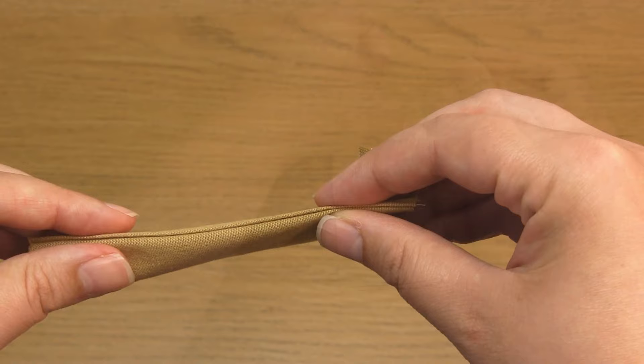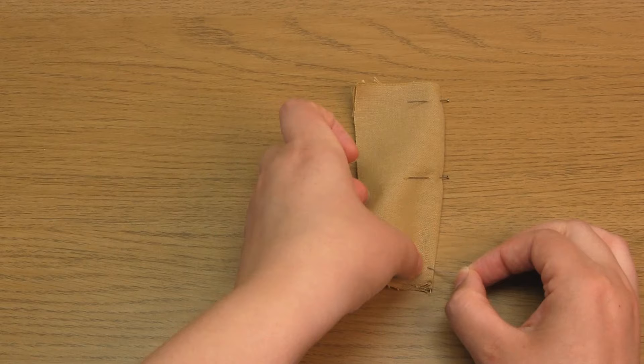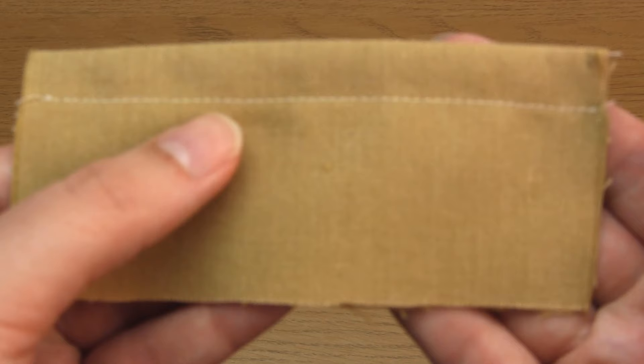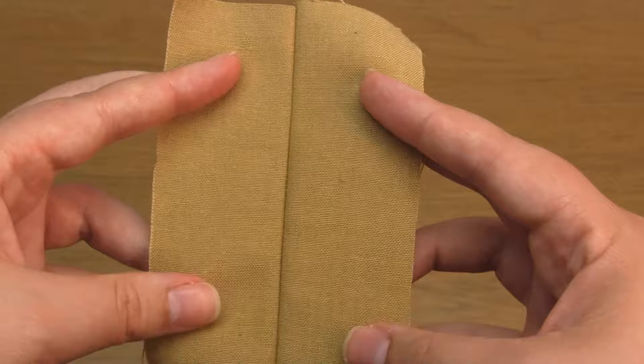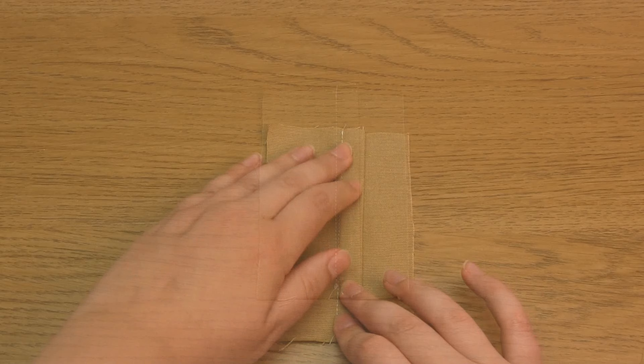Pin the fabric pieces in place and sew half an inch from the edge. And lastly open the fabric out and press the seam allowance to one side. And there we go, this French seam is complete.